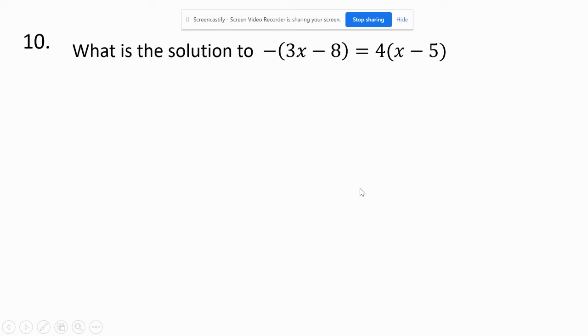And then, one last problem here. We have a distributive property on both sides. And don't forget, all that negative means is it's -1 times each of those. So, it changes it to a positive 3x to a -3x. A -8 to a positive 8. The 4 to an x. 4 times x is x. And 4 times -5 is -20. And what I'm going to do here is this here.